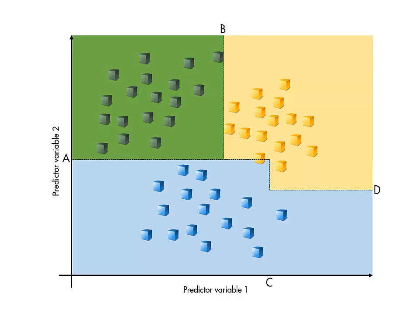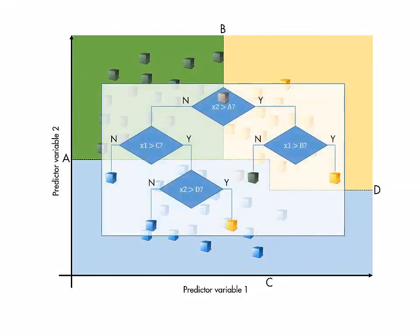Once a tree classifier is trained, making predictions is extremely quick because it requires nothing more than a handful of binary decisions.